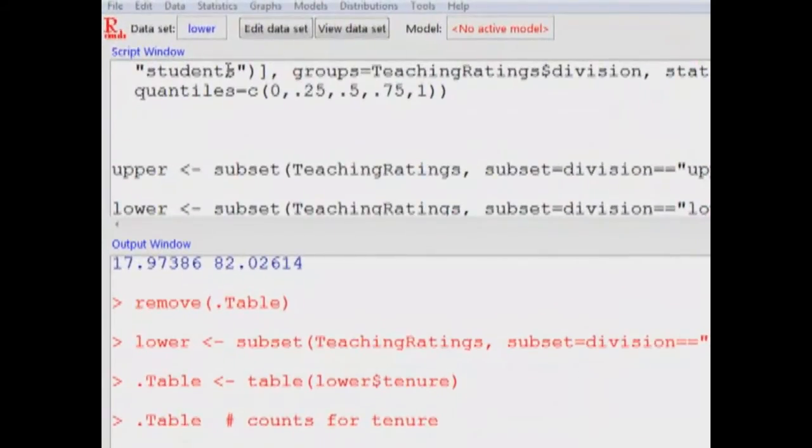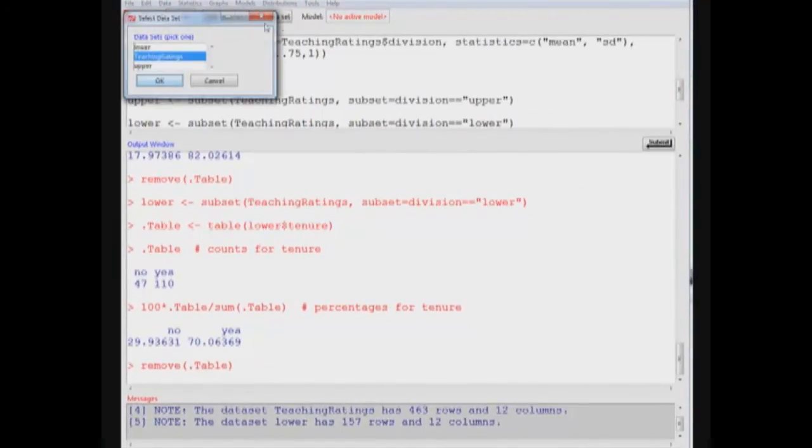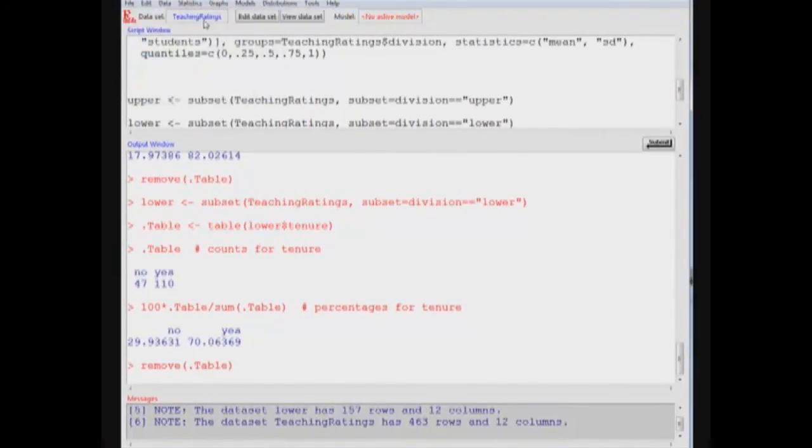Now, how to get the tabulations for categorical variables? There's a trick involved. The trick is to look at the dataset, and if you want to separate them by upper and lower-level courses, as it is the case here, lower-division and upper-division courses, you have to subset the data.